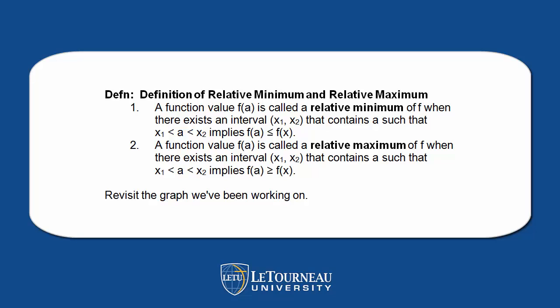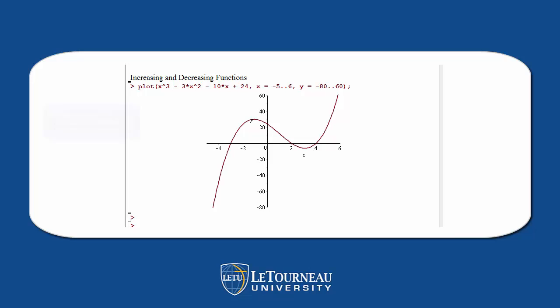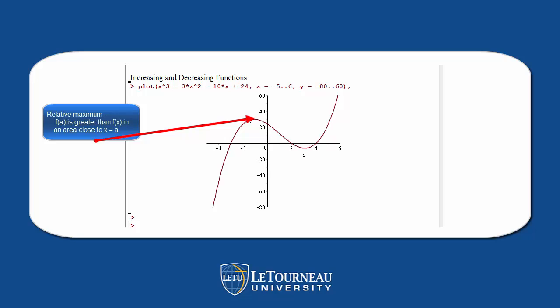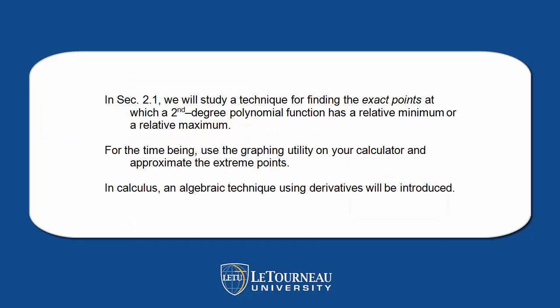Let's revisit the graph we've been working on. Here's the graph. A relative maximum occurs where f of a is greater than f of x in an area close to a. We have a relative minimum here, where f of b is less than f of x in that area close to b.